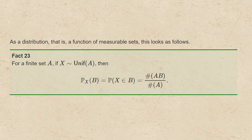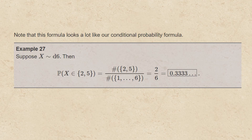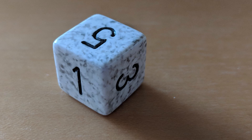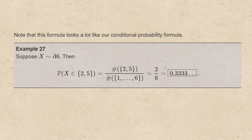Note that this formula looks a lot like our conditional probability formula. Consider the following example. Suppose that x is a D6, so it's a roll of a fair six-sided die. Then the probability that x is either 2 or 5 is the counting measure of the set {2, 5} intersected with the set {1, 2, 3, 4, 5, 6}, divided by the number of elements in {1, 2, 3, 4, 5, 6}, which is 2 over 6, or 0.3333 repeating.